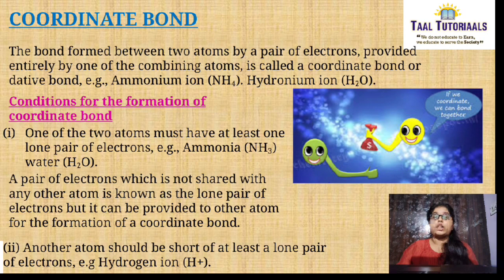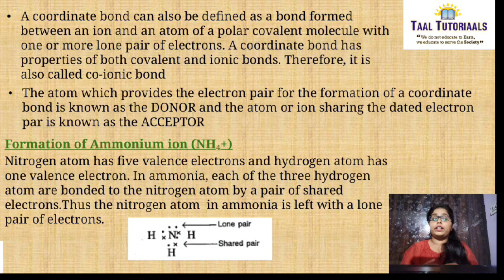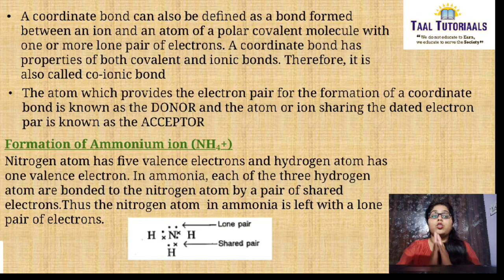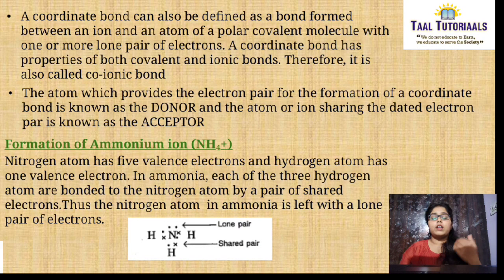The second condition is another atom should not be short of at least one lone pair of electrons, for example hydrogen ion. A coordinate bond can also be defined as the bond formed between an ion and an atom of a polar covalent molecule with one or more lone pairs of electrons. It has properties of both covalent and ionic bonds, so it is known as a coionic bond. The atom which provides the electron pair is known as the donor and the accepting ion is known as the acceptor.